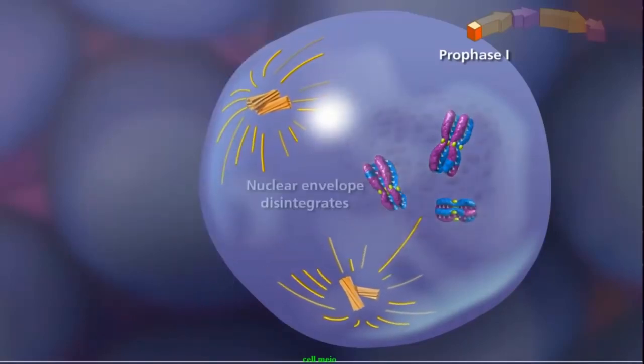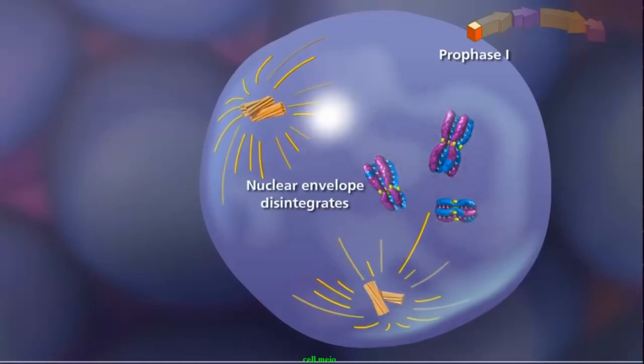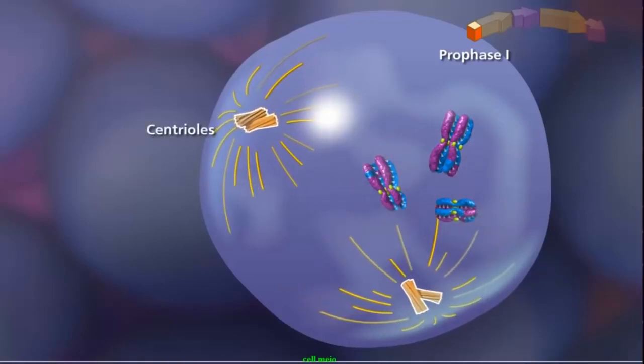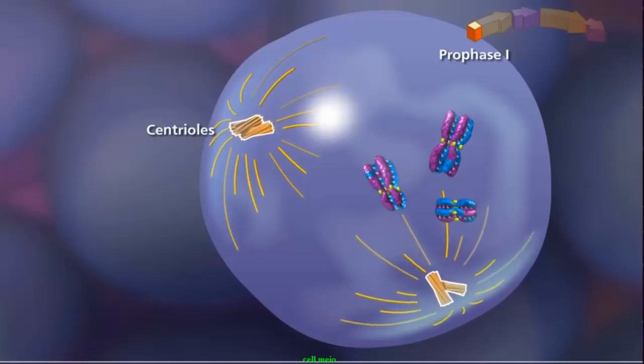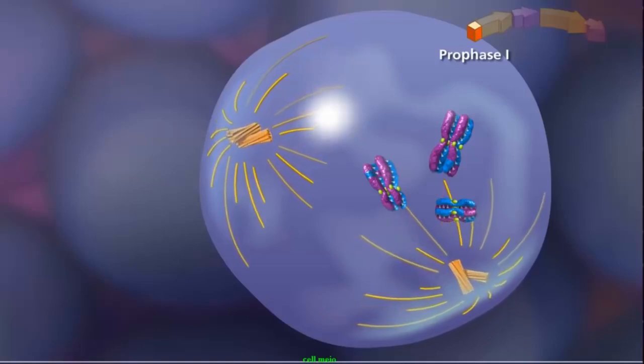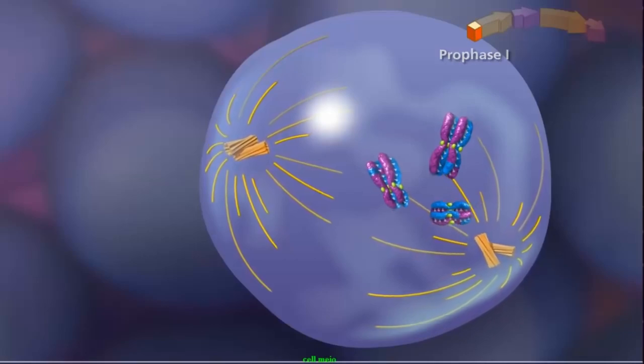Prophase I concludes with the fragmentation of the nuclear envelope as the duplicated centriole pairs move to opposite poles of the cell. As they move, the centrioles extend spindle fibers forming the meiotic spindle.